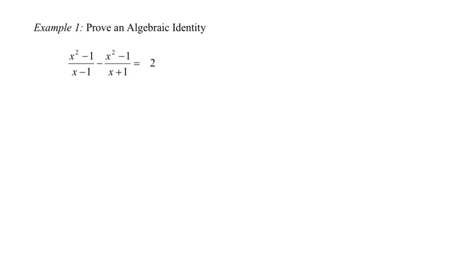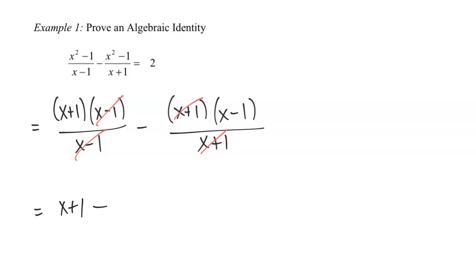For both of these fractions, I'm going to take that numerator and factor it into x plus one and x minus one. What that's going to lead to then is a cancellation in both fractions. In the first fraction, I see that x minus one is going to cancel. In the second fraction, I see that x plus one is going to cancel.